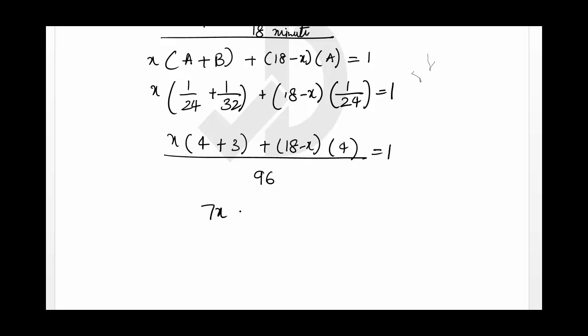So 7x plus 18 into 4, that is 72, minus 4x equals 96. So it gives 3x equals 96 minus 72. 3x equals 24, which implies x equals 8.